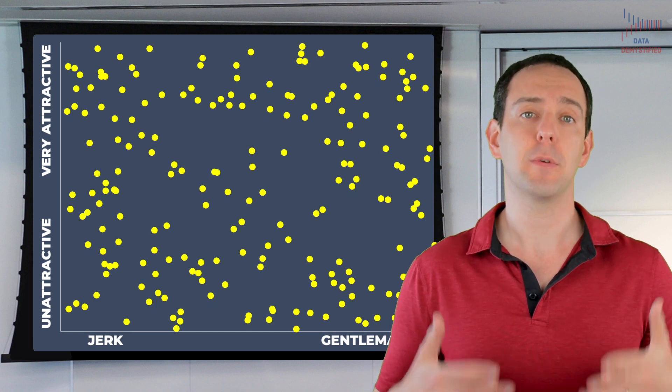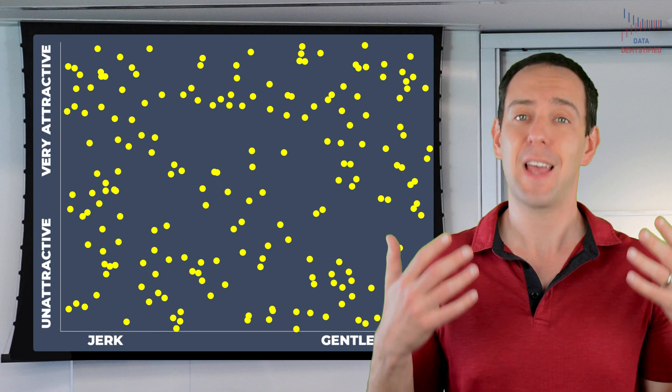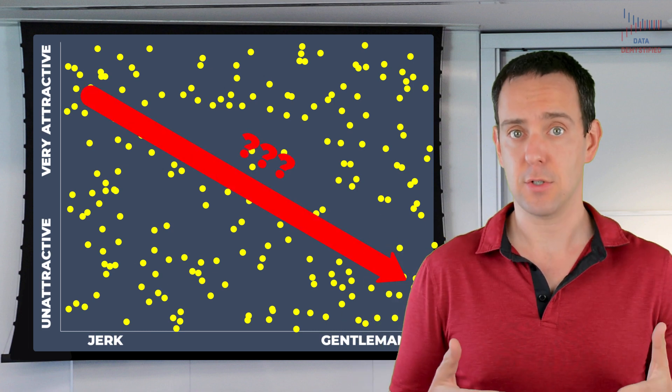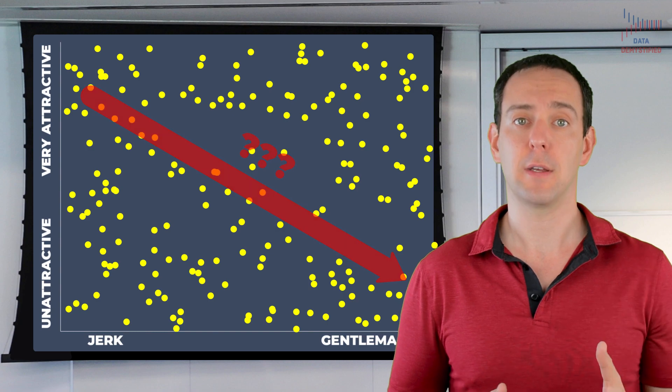So why do so many people think that there is actually a negative correlation, a negative relationship, between attractiveness and personality? Well, it all has to do with the fact that the sample of men that people are exposed to, especially while dating, isn't randomly picked from the entire population of men. Instead, people tend to use very specific rules when deciding who to date.